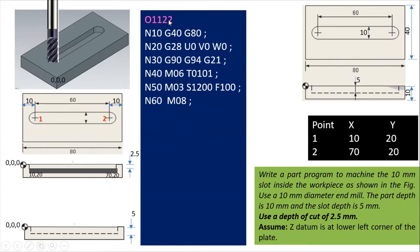When writing the program, we always give the O program number — you can give any four-digit number from 1 to 9999. I've given O1112. Then block number N10: G40, G80 — G40 cancels any previous cutter compensation, and G80 is the canned cycle cancel command. Next is N20: G28 U0 V0 W0 — it means the tool will move to its home position, that is, automatically return to its reference position.